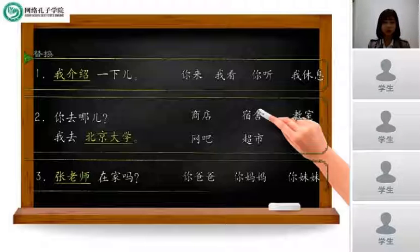好, 我们看第三个. 张老师在家吗? We need to use the given word to replace it. Let's read the given word together: 你爸爸, 你妈妈, 你妹妹. So your father, your mother, and your younger sister. We can replace the word, use the first one: 你爸爸在家吗? And two, 你妈妈在家吗? 你妹妹在家吗? Yes, it's very easy. 很简单.